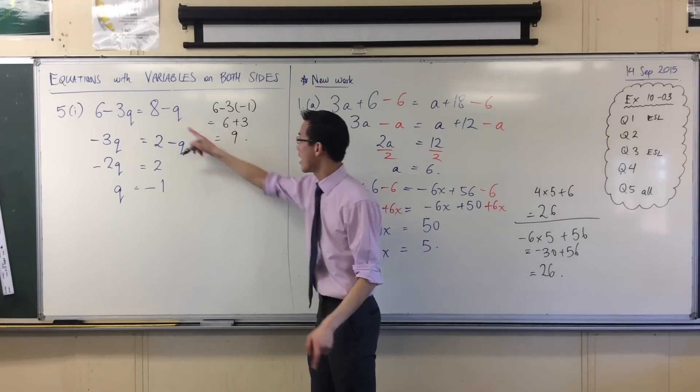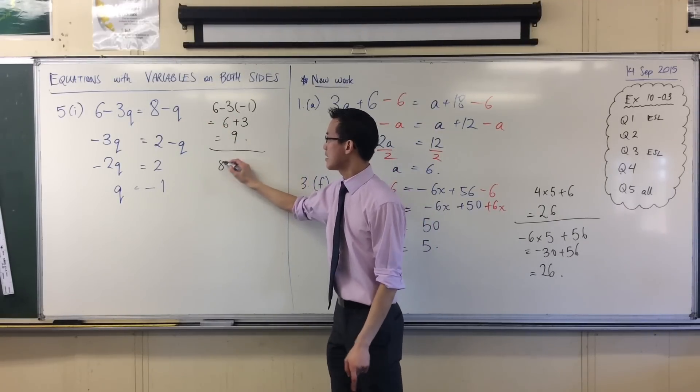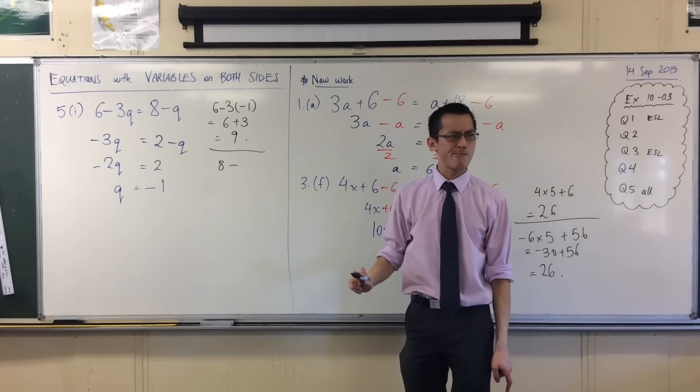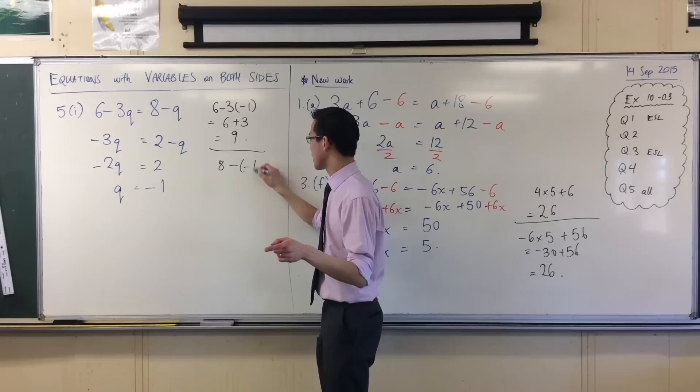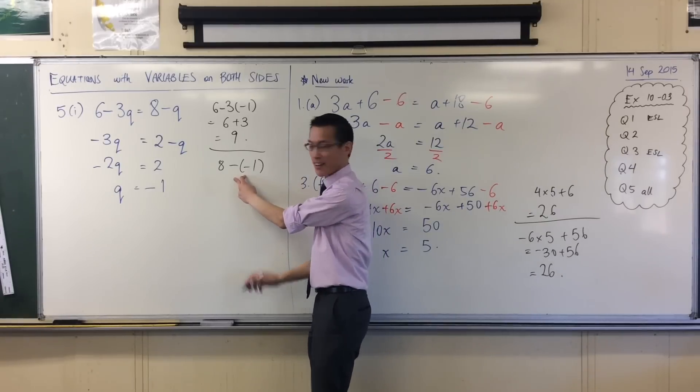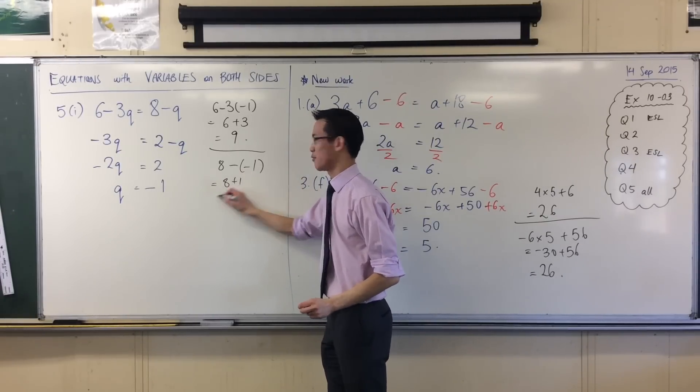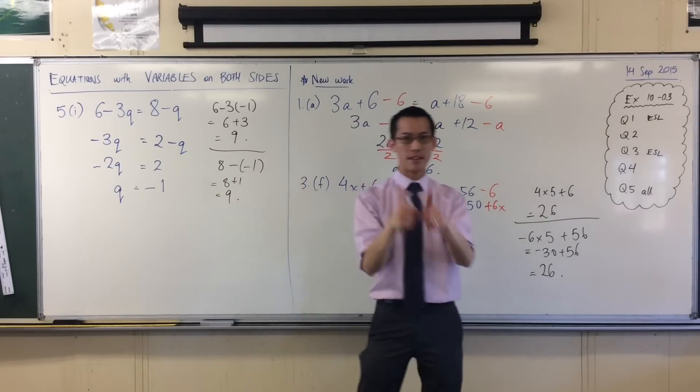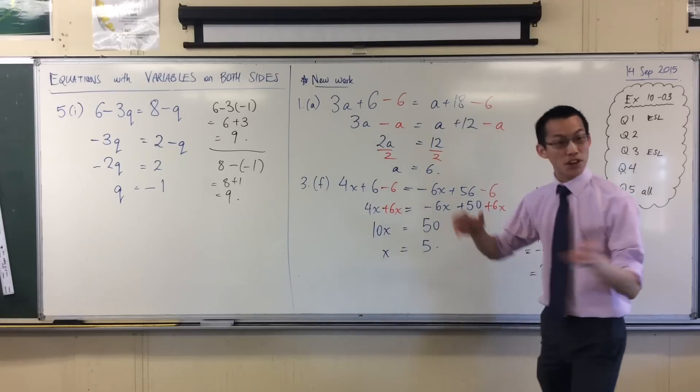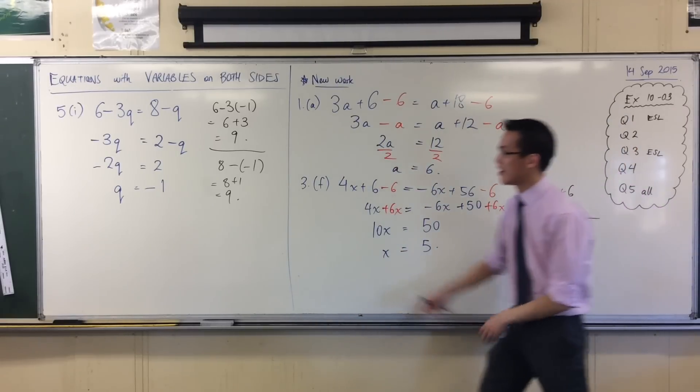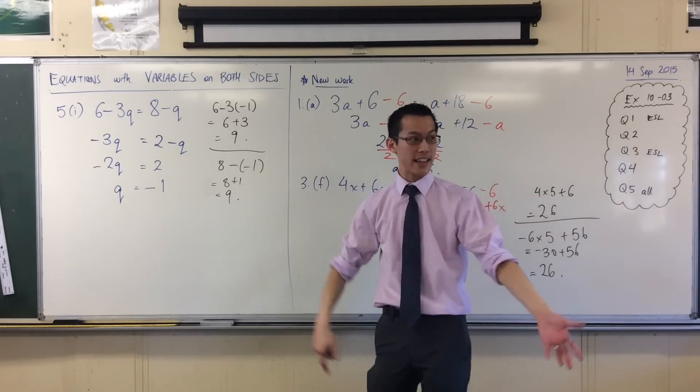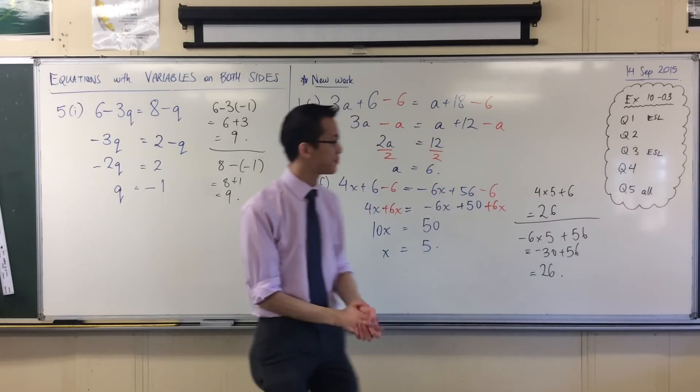Now, I'm going to have a look at the right-hand side. 8 take away minus 1. And again, I've got 2 negatives. You see that? Which is 8 plus 1, which sure enough is 9. Nailed it. So you can always check. You never have to have any doubt. In fact, even this part you could have done in your calculator might have been even faster. All right. Thank you.